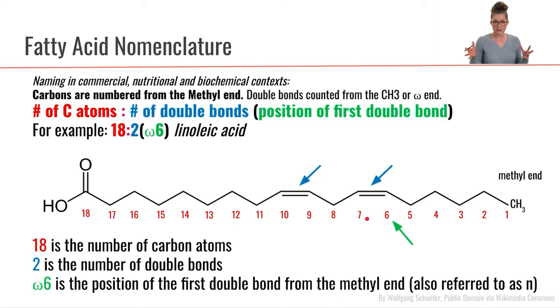Now the other specific nomenclature that is used here is the term omega. If you think back to the Greek alphabet, omega is the last letter. So we use the term omega to say how far away we are from the end. In this case, we would use the term omega to denote where the first double bond is.